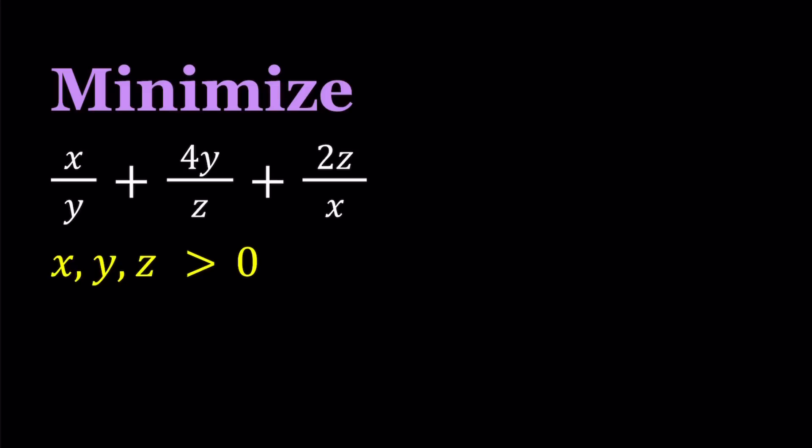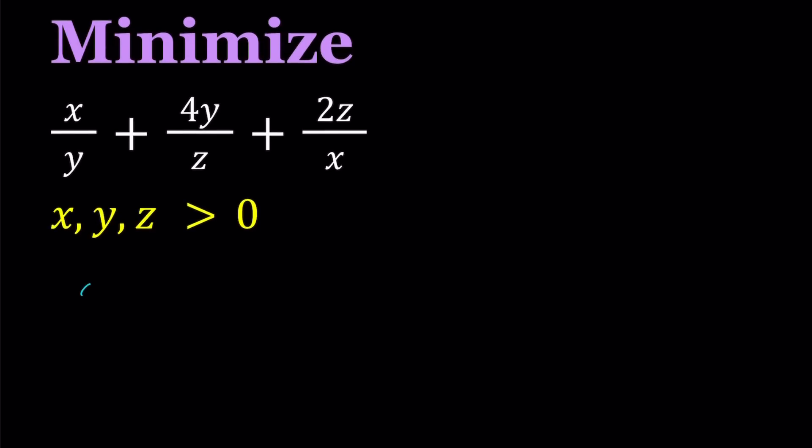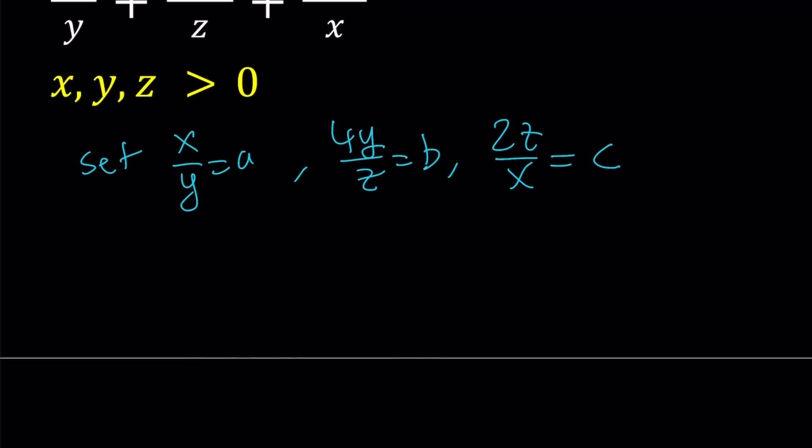To minimize this expression, I'm going to use inequalities. And then at the end, I'm going to prove that the value we get from here is also attainable. So let's set x over y equal to a, 4y over z equal to b, and 2z over x equal to c. So the expression we're trying to minimize is as easy as a plus b plus c.